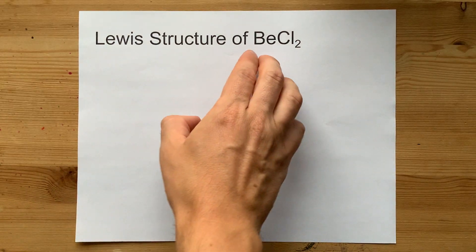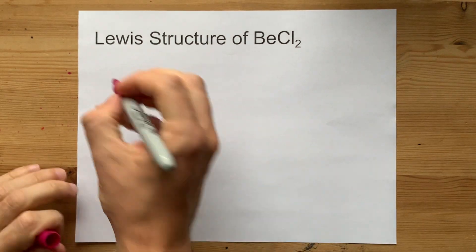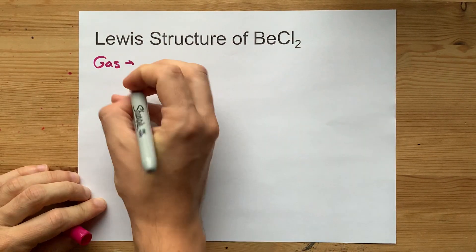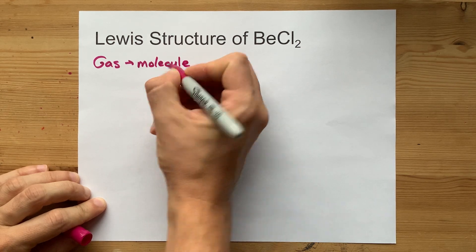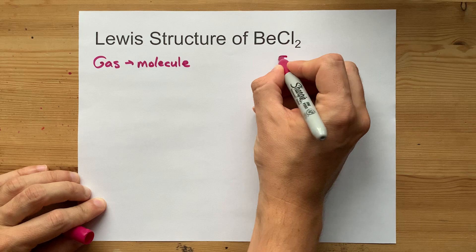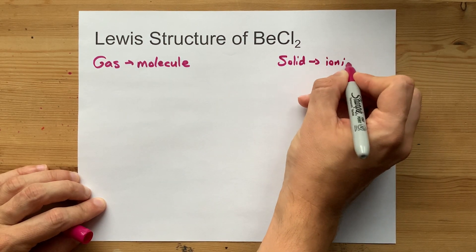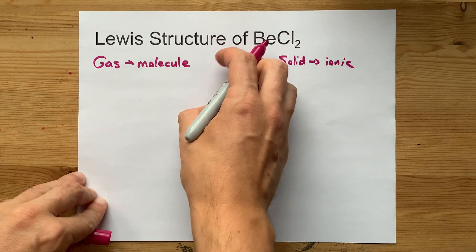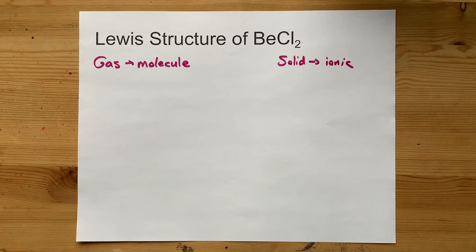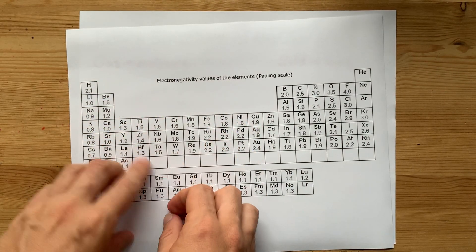The Lewis structure of beryllium chloride is complicated. The reason is that in the gas phase, BeCl₂ acts like a molecule with covalent bonds. But in the solid phase, it acts like an ionic compound — a lattice of ions, beryllium +2s and Cl -1s. You need to understand that it's kind of on the edge due to the electronegativity difference.